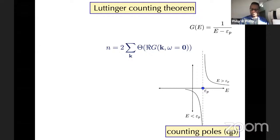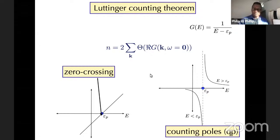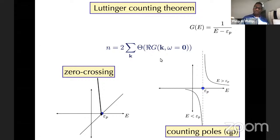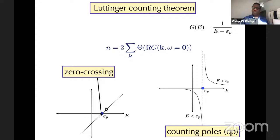Written in this form, the theorem only cares about the sign of the Green's function, not the mechanism by which it became positive. For example, you could have a zero crossing — mathematically this is tied to the singularities of log G, and log G is singular both when G equals zero and when G equals infinity. G equals infinity corresponds to poles; G equals zero corresponds to zero crossings. So both are present here.